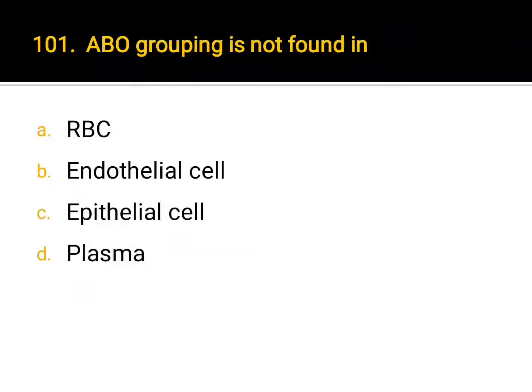FU grouping is not found in: A. RBC, B. endothelial cell, C. epithelial cell, D. plasma. Correct answer: D. Plasma.